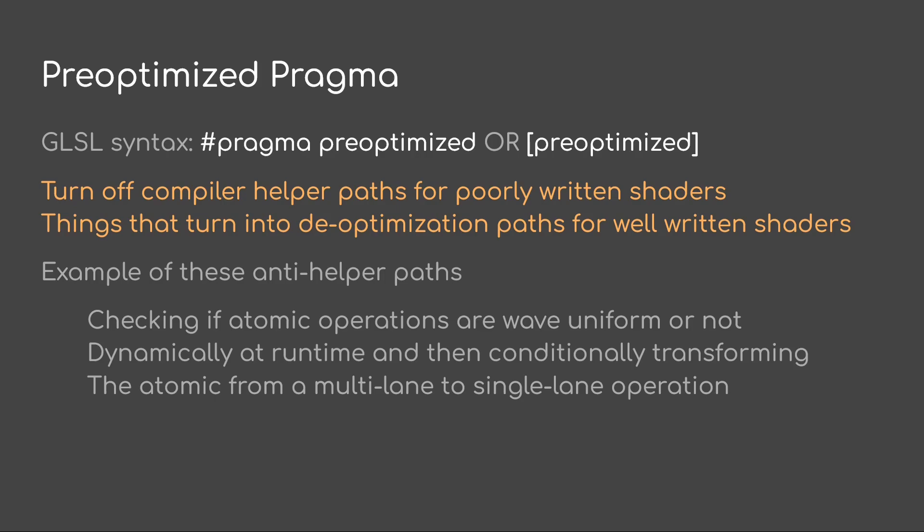A great example of one of these anti-helper paths is checking if an atomic operation is wave uniform or not, and then dynamically at runtime conditionally transforming the atomic from a multi-lane to single-lane operation. If you're already doing that in the shader yourself, you don't need the compiler doing it a second time for you.